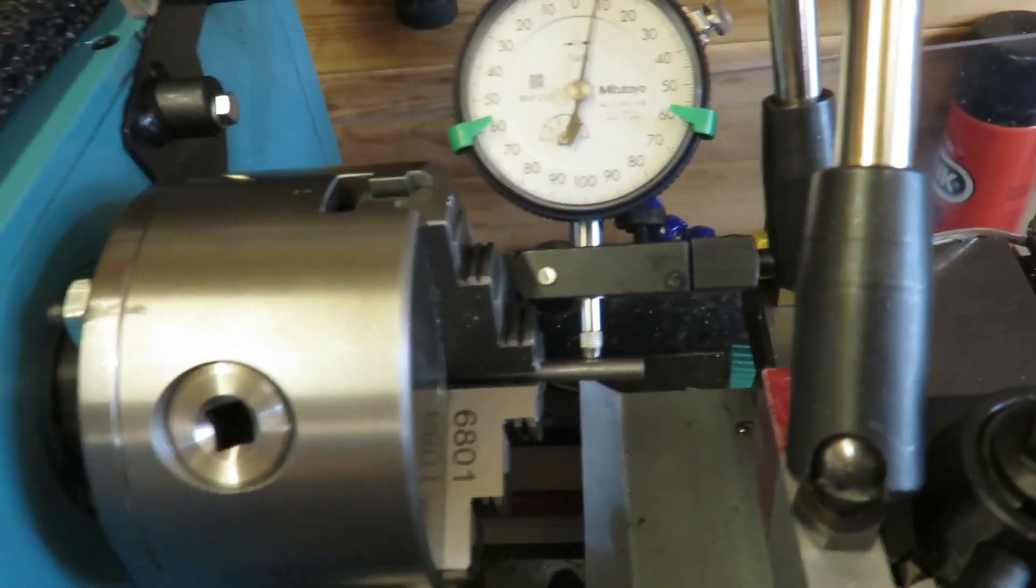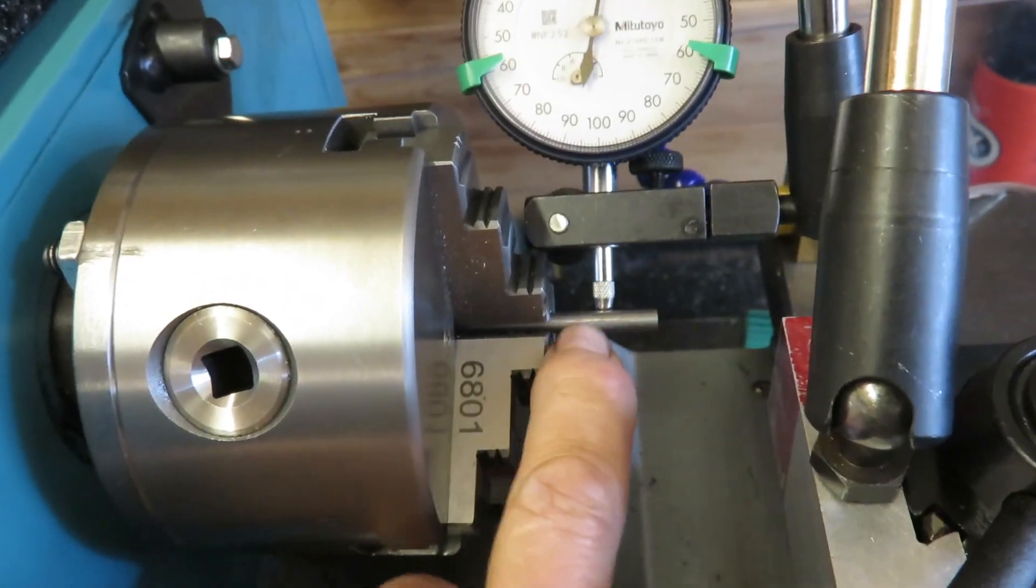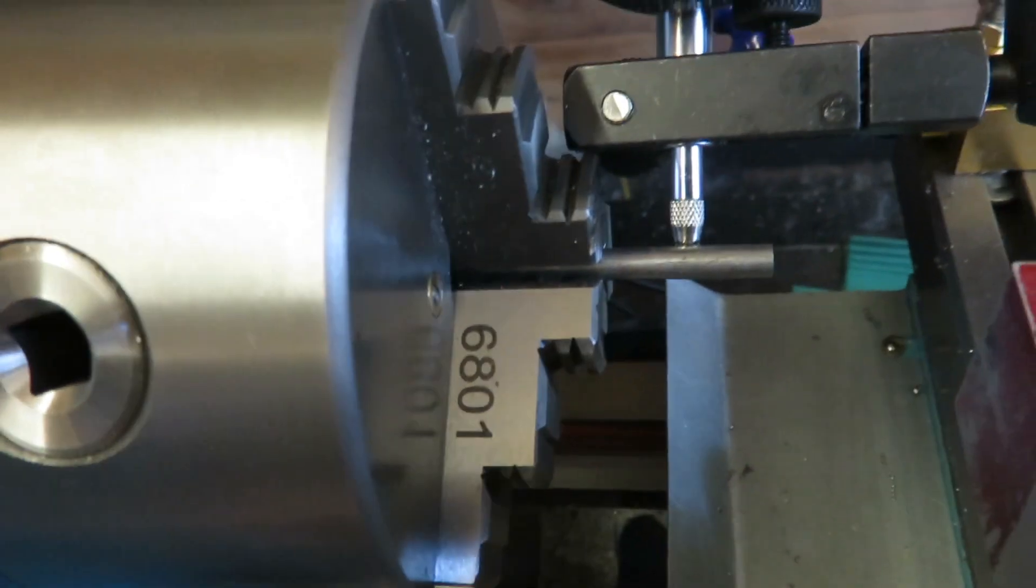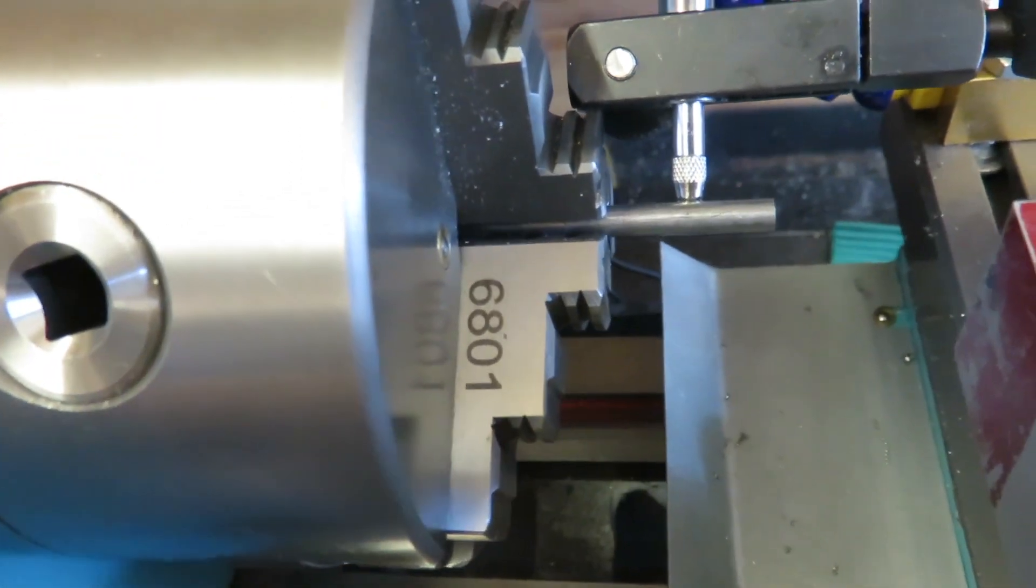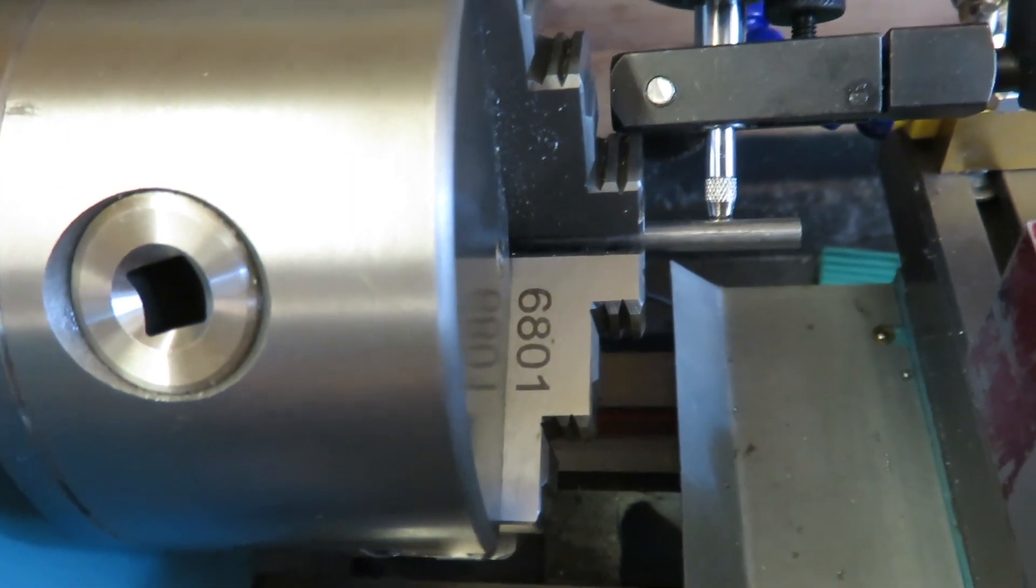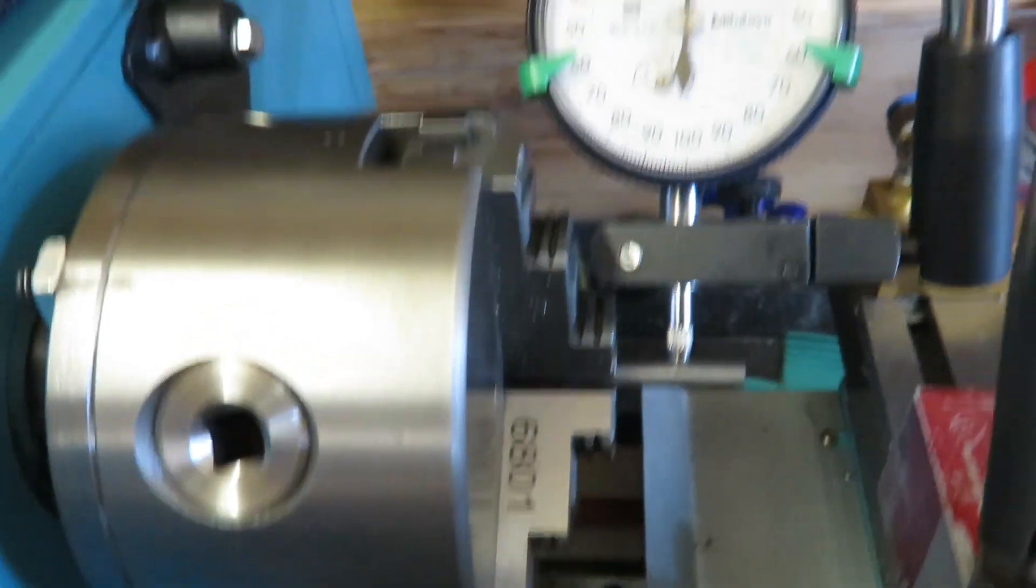What I'm using here is a rod out of an inkjet printer. The rods they use for carrying the print head are incredibly precisely made, and they're ideal for this sort of thing, for testing lathes and such.